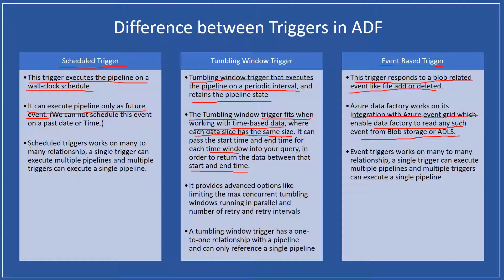The third important difference is that scheduled trigger works on a many-to-many relationship. That means one trigger can execute multiple pipelines, and similarly one pipeline can be executed by multiple triggers. This is called a many-to-many relationship in case of triggers and pipelines. However, in the case of tumbling window trigger, it has only a one-to-one relationship with pipelines — with a tumbling window trigger, we can reference only a single pipeline. Event-based triggers also work on a many-to-many relationship, similar to schedule triggers.